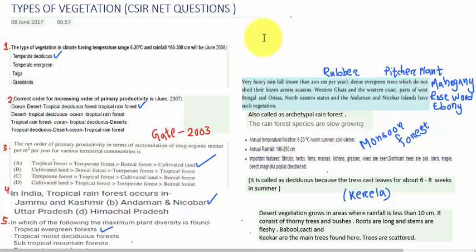We know that the geographical region is distributed into the tropics region, then the sub-tropical region, and the temperate region. So here the answer is temperate deciduous.